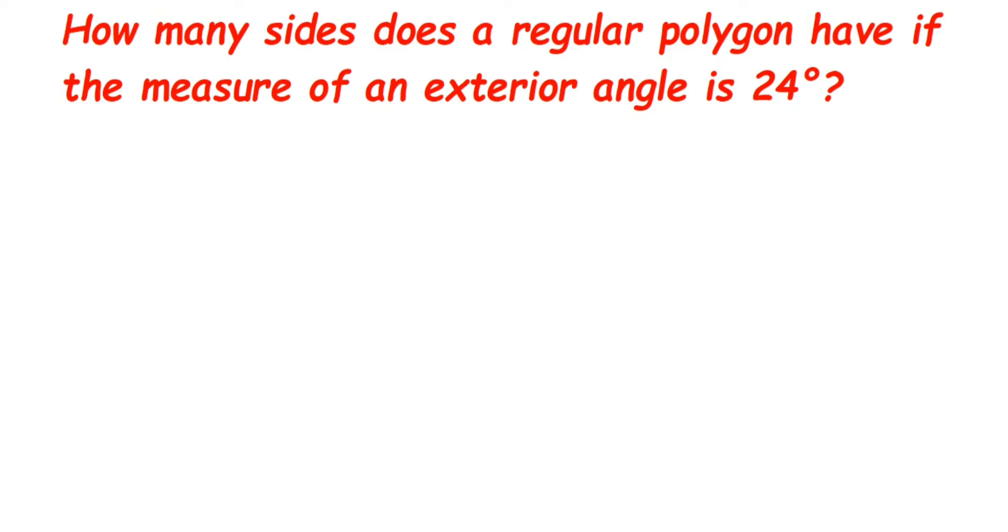It's not just one because they have given regular polygon. Regular means the exterior angles, all the exterior angles and all interior angles will be the same. All the exterior angles will be of 24 degrees, and all the interior angles, whatever they will be, the measure will be the same.